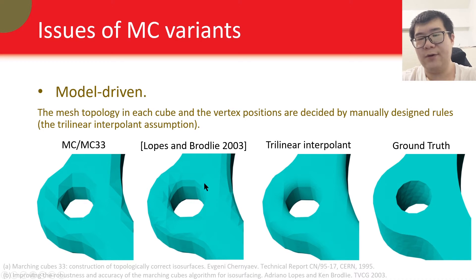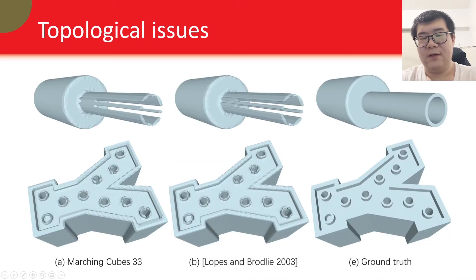Those variants of marching cubes that have this trilinear interpolant assumption treat this trilinear interpolant as their ground truth. So there is a paper by Lopes and Brodlie in 2003, where they actually designed more complicated tessellation templates, able to represent sharp features. But because they also followed this trilinear interpolant assumption, their result is even smoother than the original marching cubes. This is because they treat the trilinear interpolant as their ground truth. The trilinear interpolant assumption affects not only the positions of the vertices, but also the topology in each cube. You can see the clear artifacts produced by Marching Cubes 33 and the method by Lopes and Brodlie, compared to the ground truth. This is because the trilinear interpolant of the input grid looks exactly like this, and it is not correct.